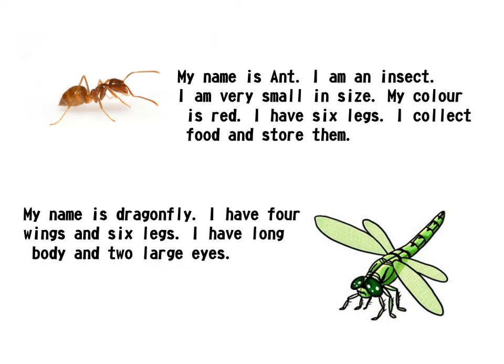My name is Ant. I am an insect. I am very small in size. My color is red. I have six legs. I collect food and store them. My name is Dragonfly. I have four wings and six legs. I have a long body and two large eyes.